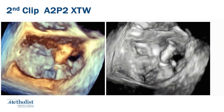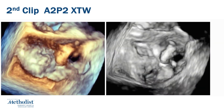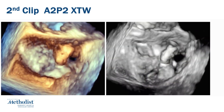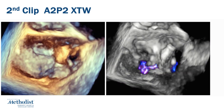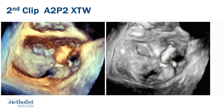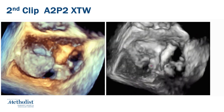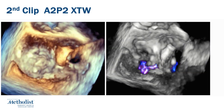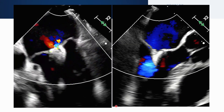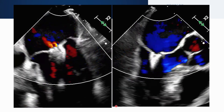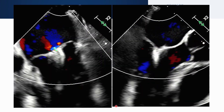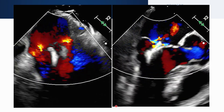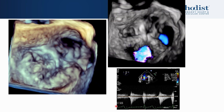On the 3D with and without color, you can see the second clip is in the A2-P2 scallop region. The mitral regurgitation is very successfully nearly abolished, with only a very trivial amount of mitral regurgitation between the two clips, as noted on the 3D color image.